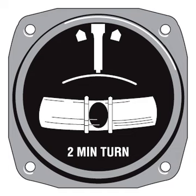The turn coordinator is a further development of the turn and slip indicator, with the major difference being the display and the axis upon which the gimbal is mounted. The display is that of a miniature airplane as seen from behind, similar in appearance to an attitude indicator. No pitch information is usually shown on the instrument to avoid confusion regarding the aircraft's pitch, which can be obtained from the artificial horizon. The turn coordinator's gimbal is pitched up 30 degrees from the transverse axis, causing the instrument to respond to roll as well as yaw, allowing it to display a change more quickly before the aircraft has even begun to yaw.